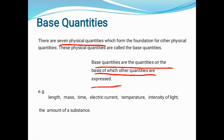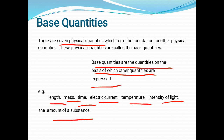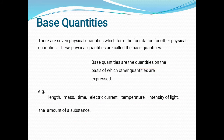The seven base quantities are: length, mass, time, electric current, temperature, intensity of light, and amount of a substance. So dear students, there are only seven base quantities. At this level, you only learn and talk about the first five of these quantities.